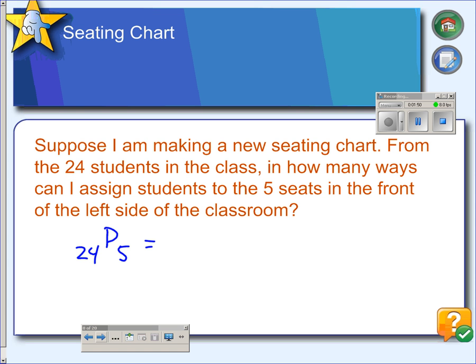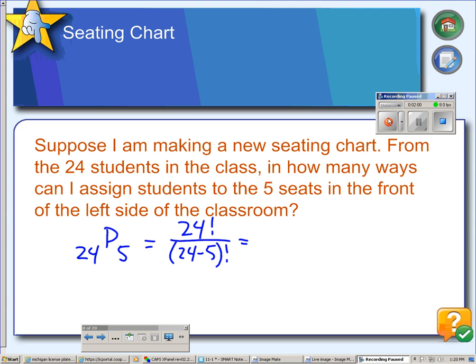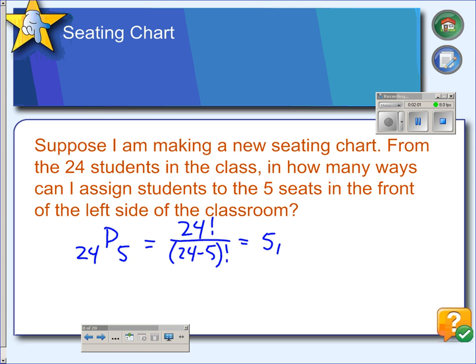Using the formula, that would be 24 factorial divided by 24 minus 5 factorial, and you can put this in your calculator, and we get 5,100,480.